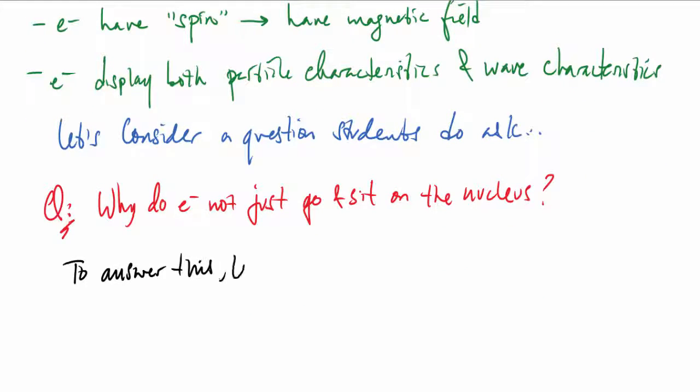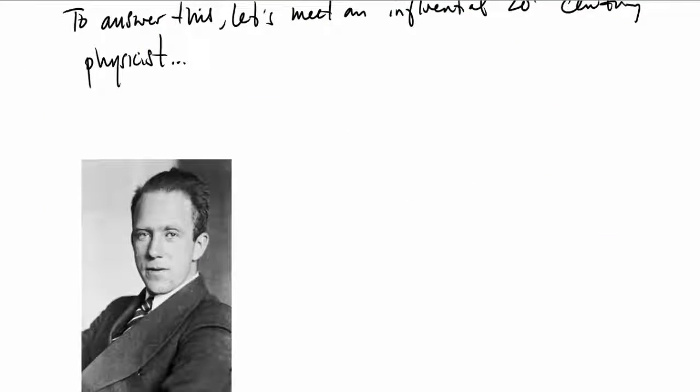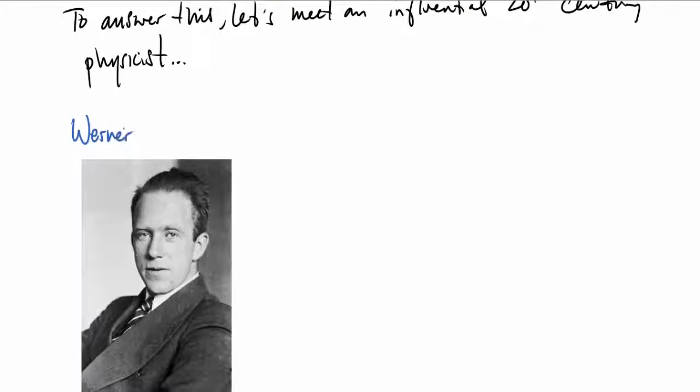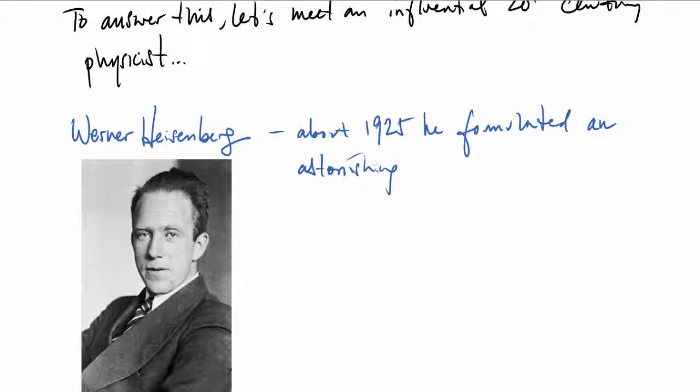To answer this, we need to meet an influential 20th century particle physicist named Werner Heisenberg. In about 1925, he formulated an astonishing idea about subatomic particles which we now call Heisenberg's uncertainty principle.